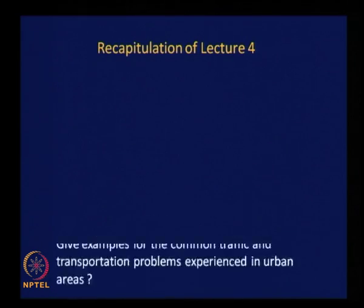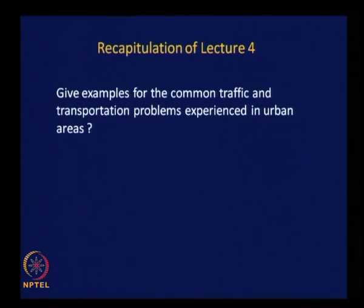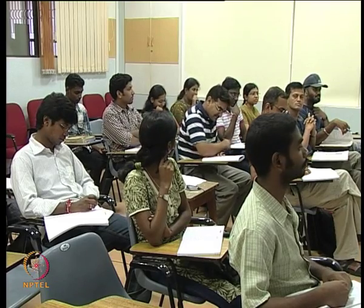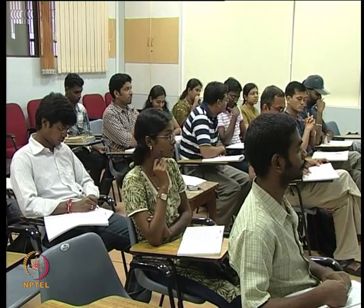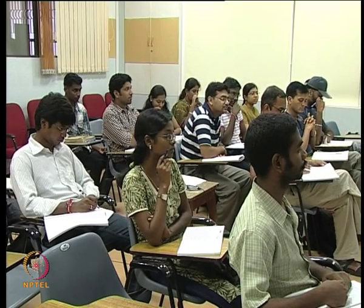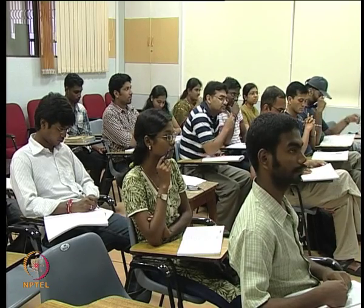The first question is: give examples for the common traffic and transportation problems experienced in urban areas. The problems are traffic congestion, lack of mobility, accessibility, disconnection in transportation modes, and crashes and injuries. These are the common problems experienced in urban areas.